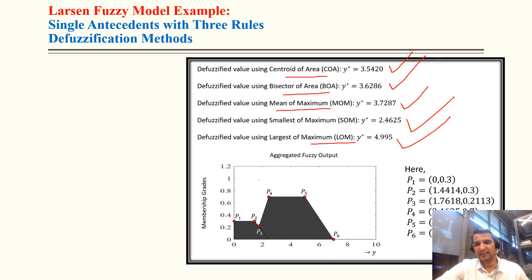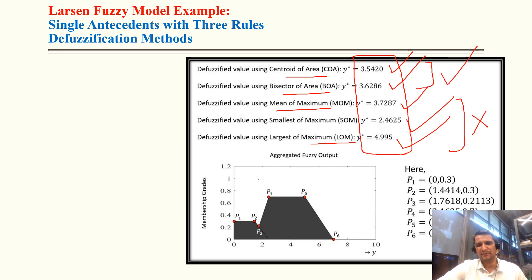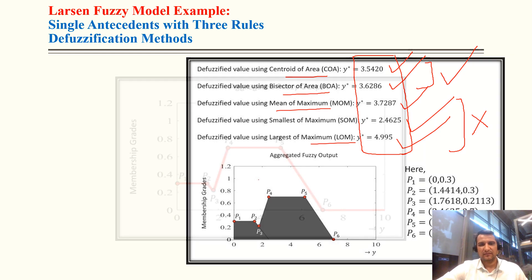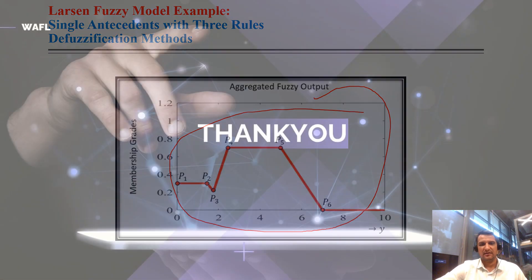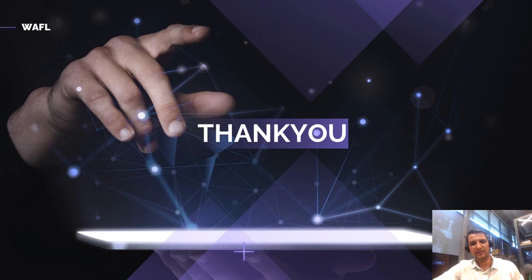Different defuzzification techniques produce different outputs. Mean of maxima, smallest of maximum, and largest of maximum should be avoided; center of area or bisector of area are the recommended methods. For this question, different defuzzification methods give different outputs from the same aggregated fuzzy output. Next, I will cover the TSK model. I hope you are now more aware of the Larsen model. Thank you.